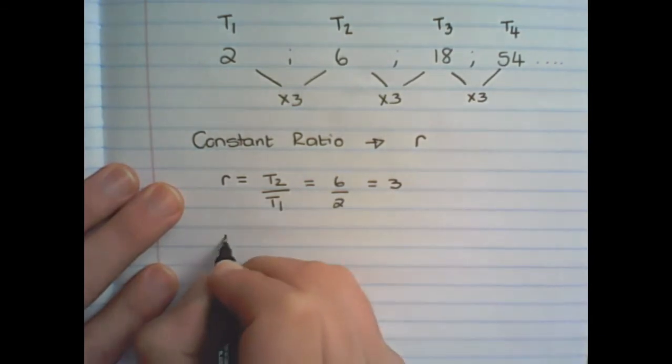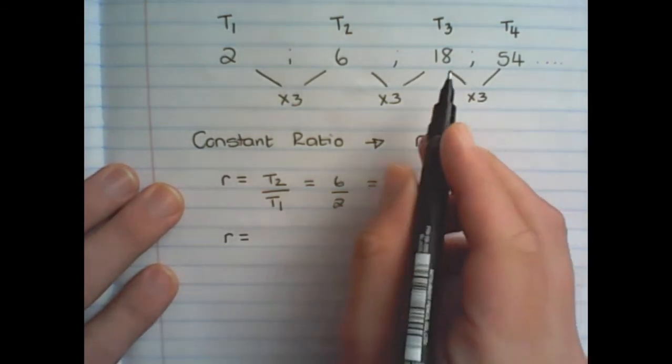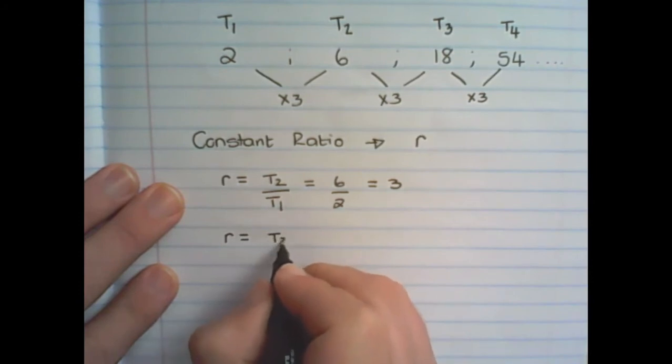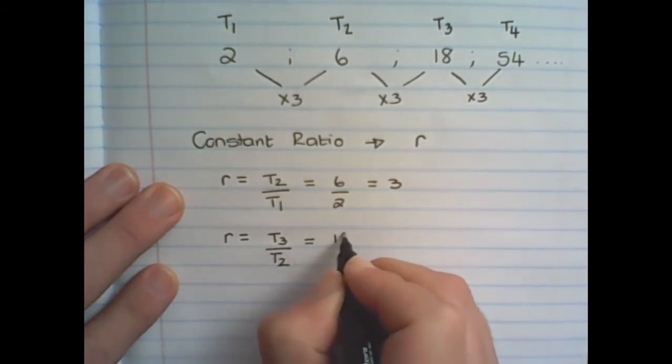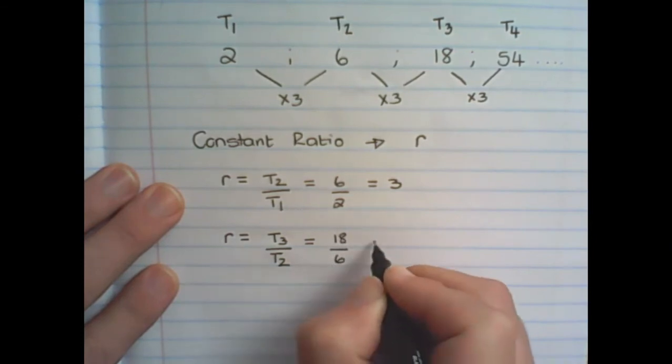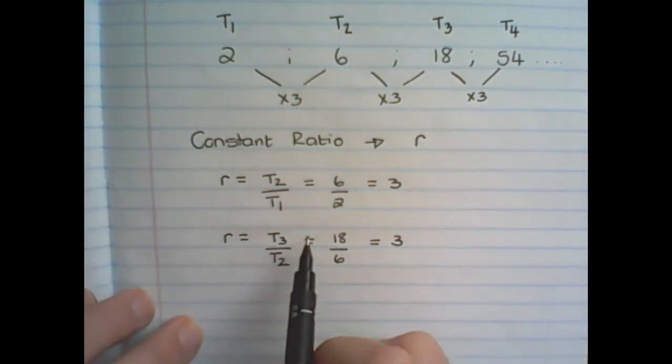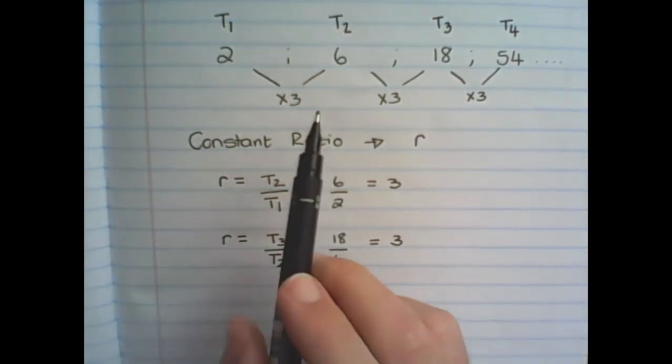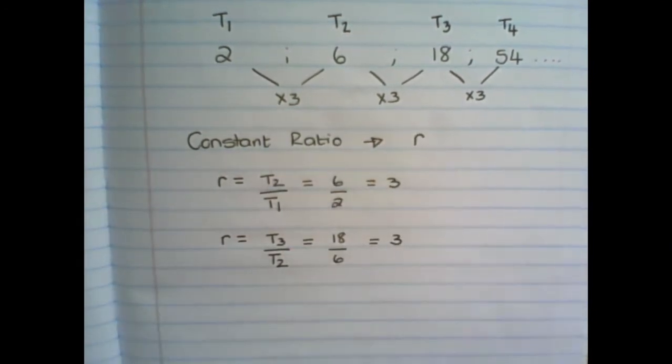And I want to test whether or not the ratio is constant. So I say term 3 divided by term 2, that is 18 divided by 6 is equal to 3. So now I can see that there is a constant ratio between the terms.